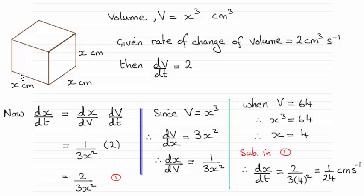And so the volume V is going to be x times x times x, x³ centimeter cubes. Now we're given that the rate of change of volume is 2 cm³ per second.